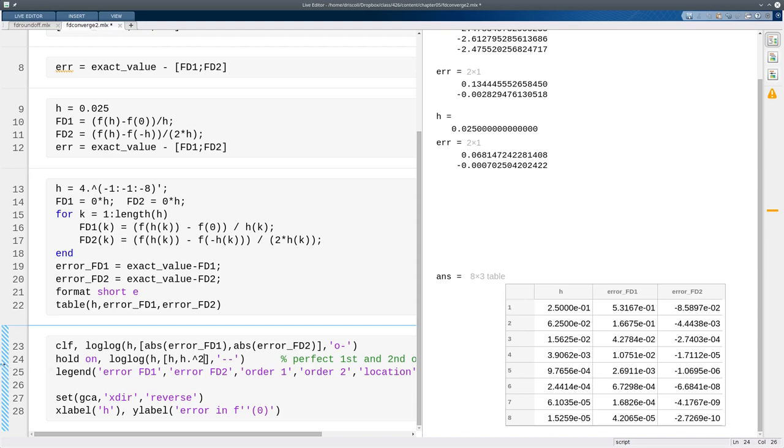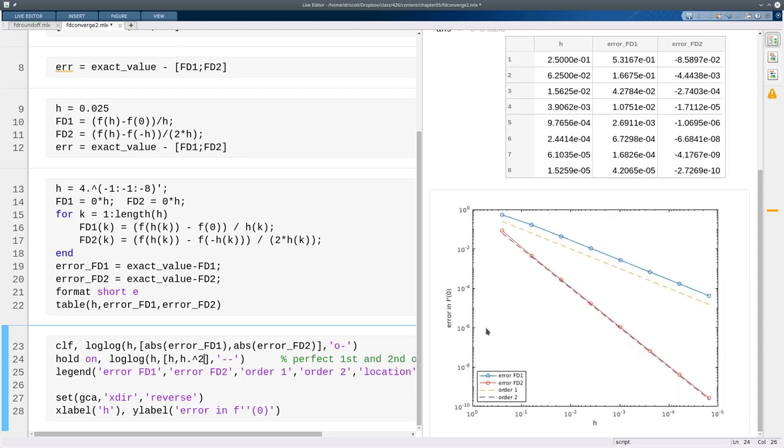These things come out very clearly if you graph the errors. I'm doing so on a log-log scale here, and notice that I've reversed the direction of the x-axis. It's traditional to put the direction of convergence of decreasing error from left to right, which means h has to decrease from left to right.